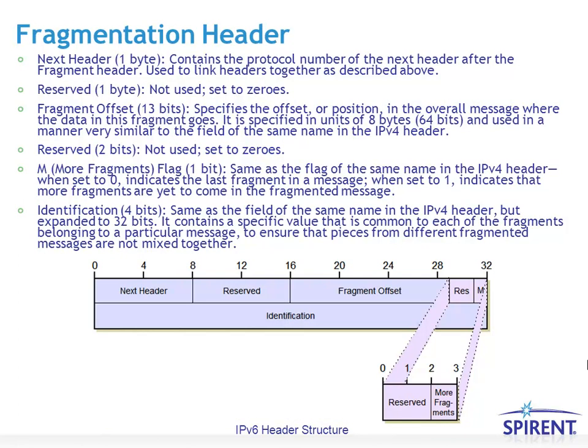This gives an example of the fragmentation header. Just like all extension headers, it starts with the next header value, pointing to the next protocol or extension header in line. There are reserved fields and a fragment offset field. Similar to IPv4, when a packet gets fragmented the identification bits are the same for all fragments, but the fragment offset indicates where that particular fragment goes when reassembling the larger packet. The more-fragments bit indicates when set that there are more fragments to come, and when zero it indicates the last fragment.